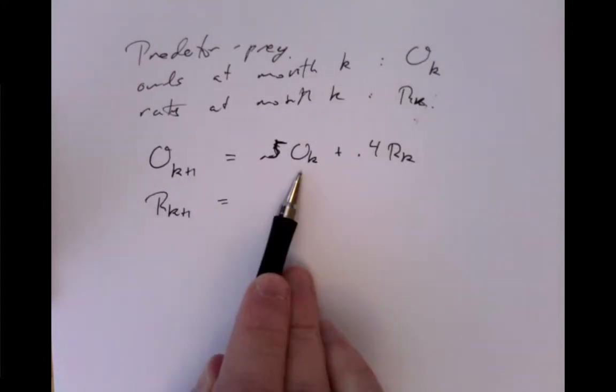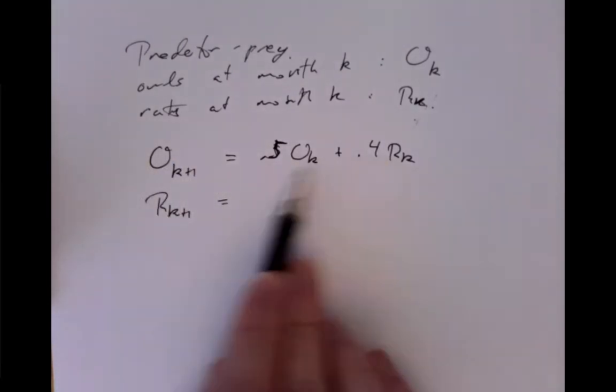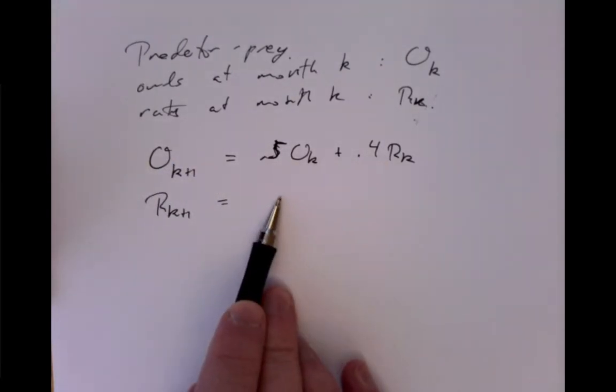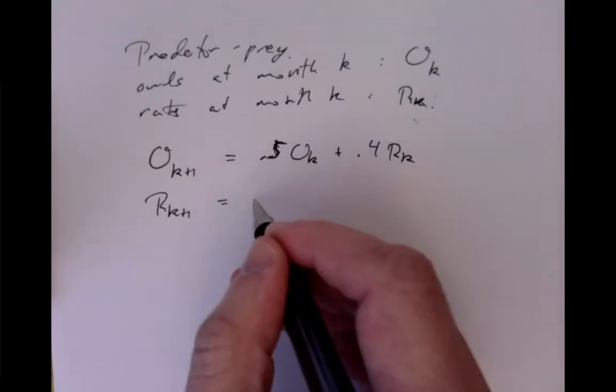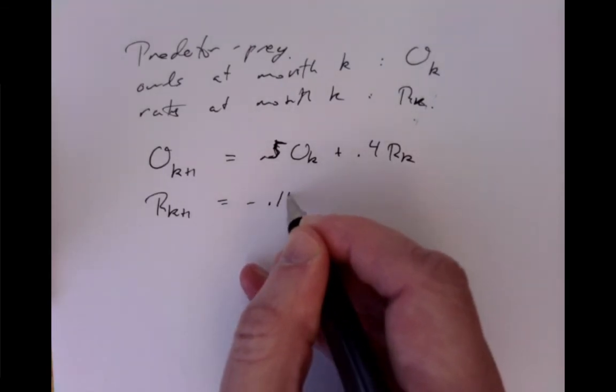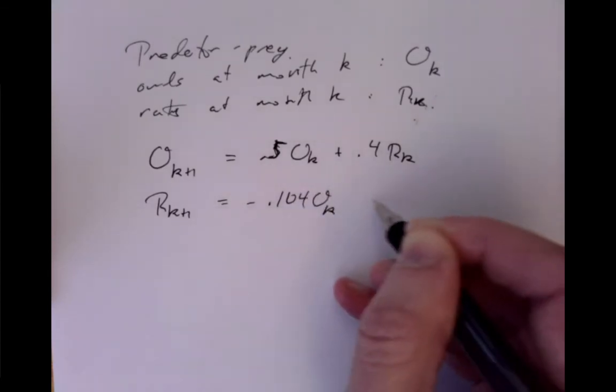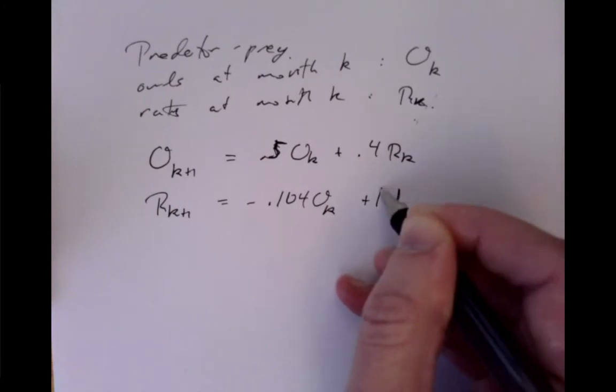which means that we have some relationship between next month's owls and rats and this month's owls and rats as measured. And we'll take this guy to be minus 0.104 owls and plus 1.1 rats.